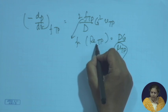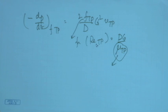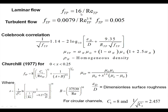Once we have found Re_tp, we need particular relationships to find f_tp. For single-phase laminar flow we have one equation, and for turbulent flow we have either a Blasius-type correlation or a constant friction factor. The same approach is adopted for macro systems: if Re_tp is less than 2100 we use the laminar equation; greater than 2100 we use the turbulent equation or a constant value.